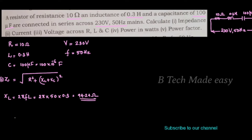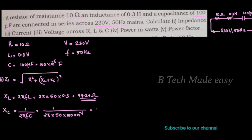Now we have XC. The XC equation is 1 by 2 pi f C, which is 1 divided by 2 pi into 50 into 100 into 10 raise to minus 6. This gives XC equal to 31.83 ohm.